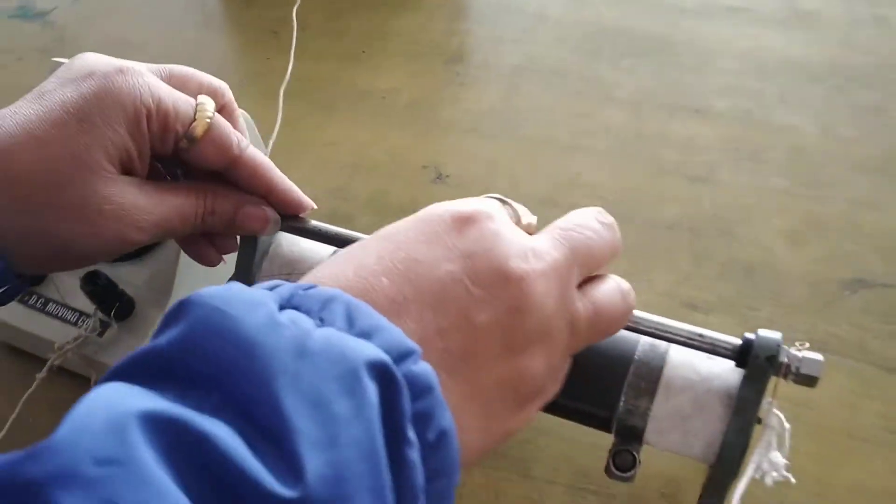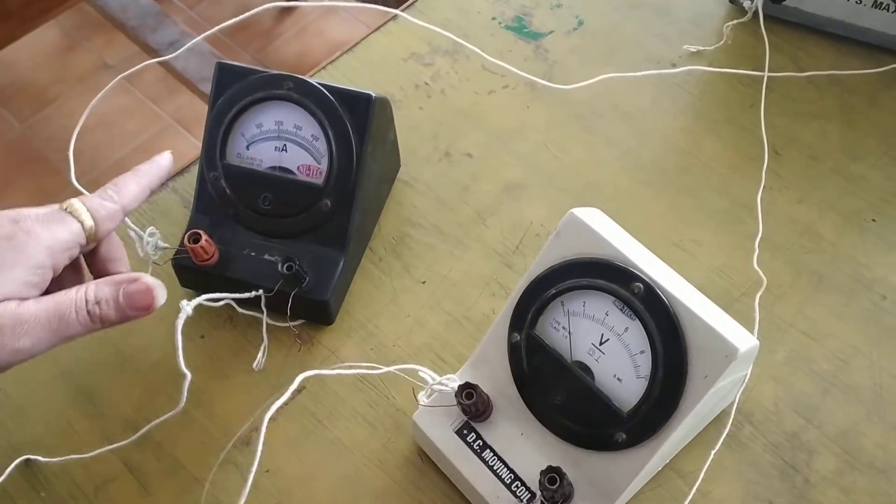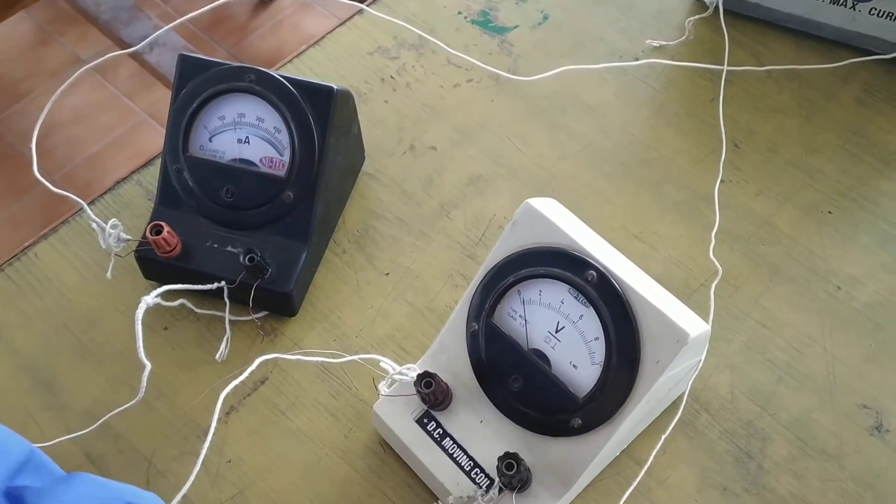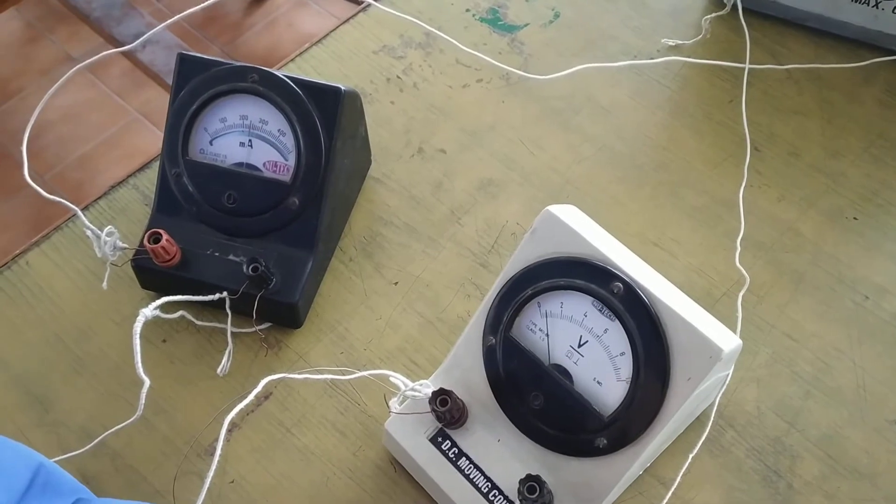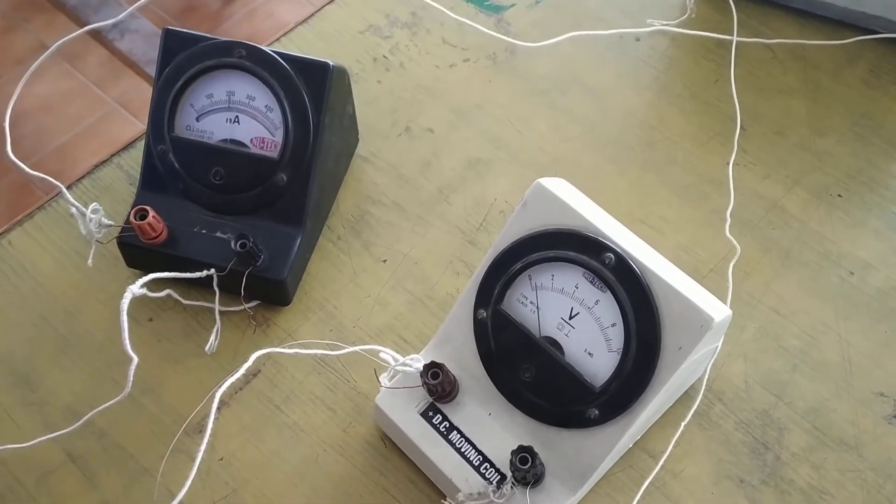Now we vary the resistance in the rheostat. You can observe that the value of I changes and correspondingly the value of V changes. That is, V is directly proportional to I. If we plot the graph between voltage and current, we get a straight line.